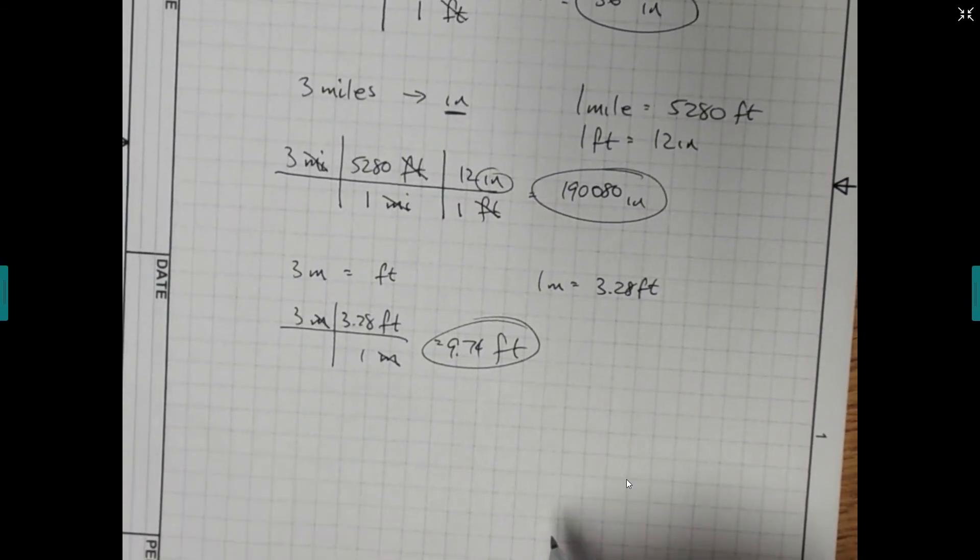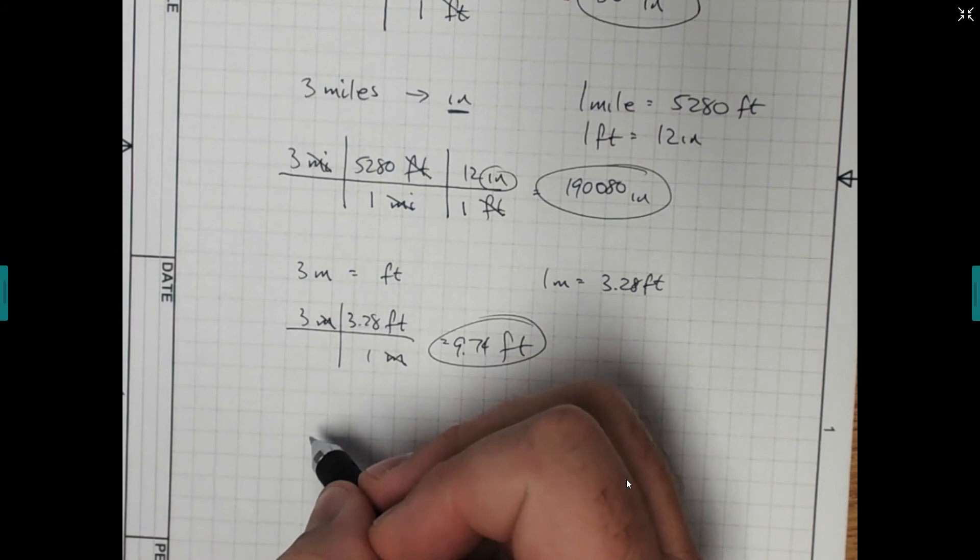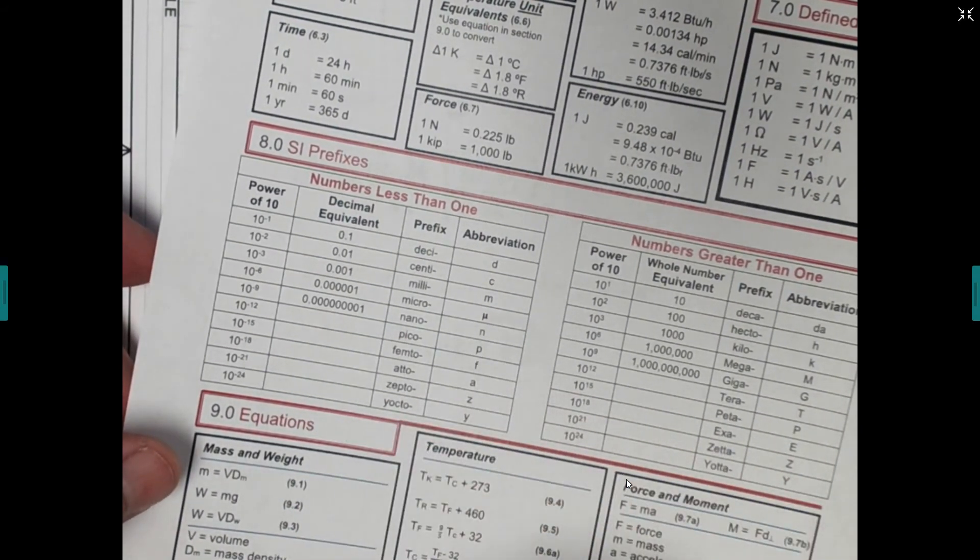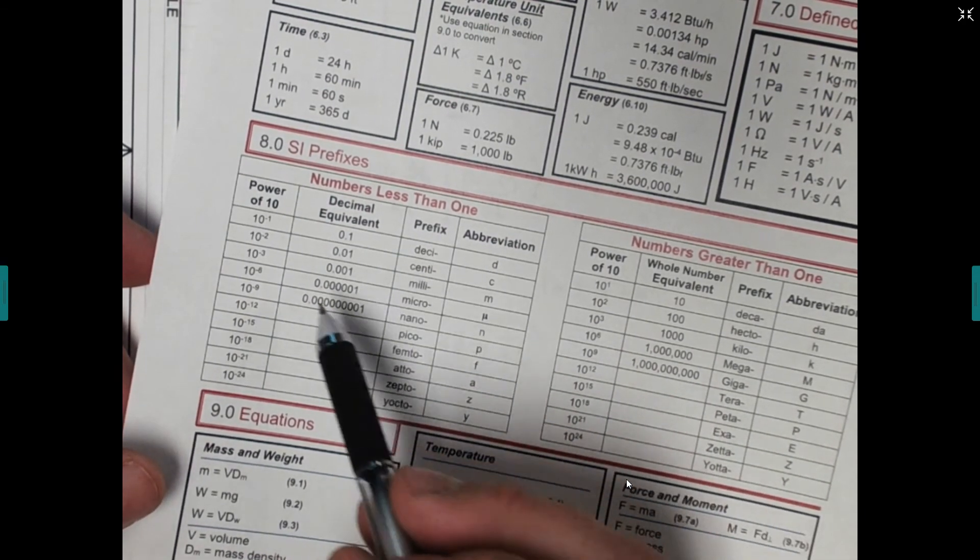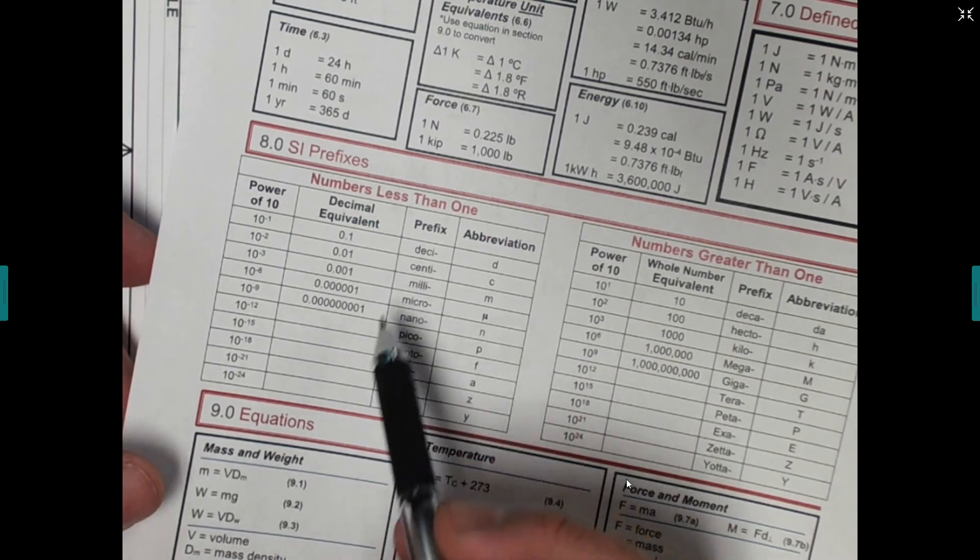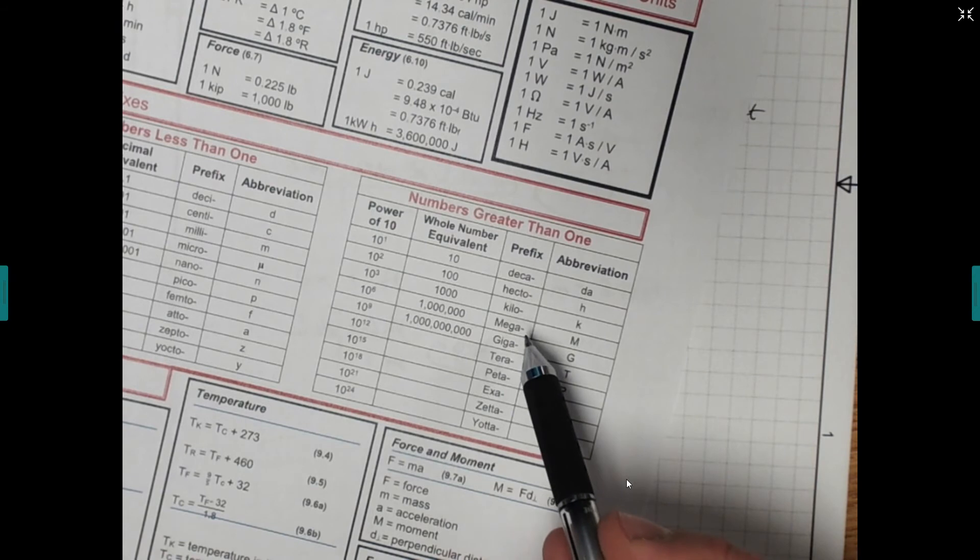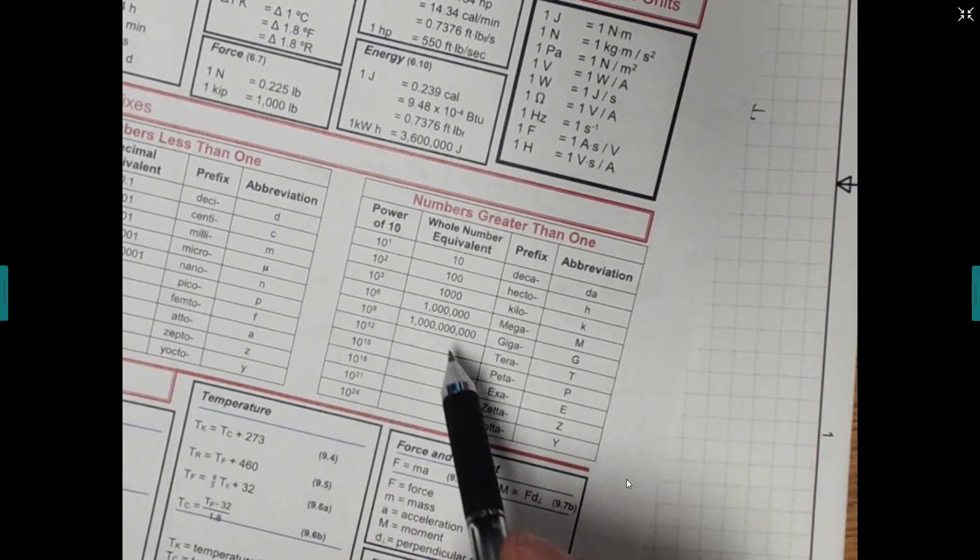You can do the same thing if you're doing metric. So with metric, sometimes they give us these prefixes. They want to know these prefixes. They have things, so instead of saying it's 0.00 grams or something, they're going to put it in milligrams or centigrams or centimeters or megagrams or kilograms or whatever it might be that we're talking about.